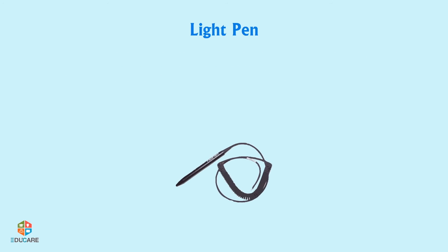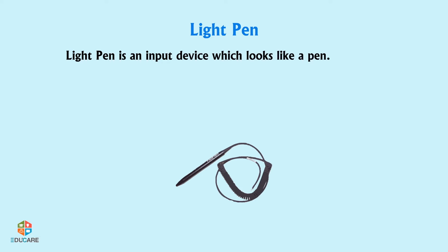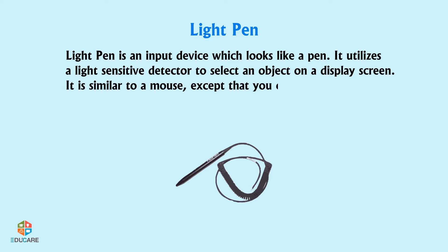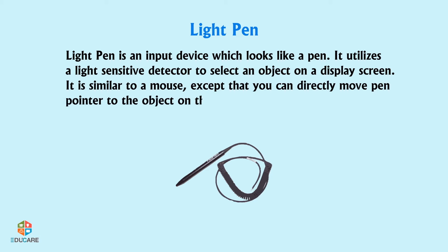Light Pen: A light pen is an input device which looks like a pen. It utilizes a light-sensitive detector to select an object on a display screen. It is similar to a mouse except that you can directly move the pen pointer to an object on the screen.